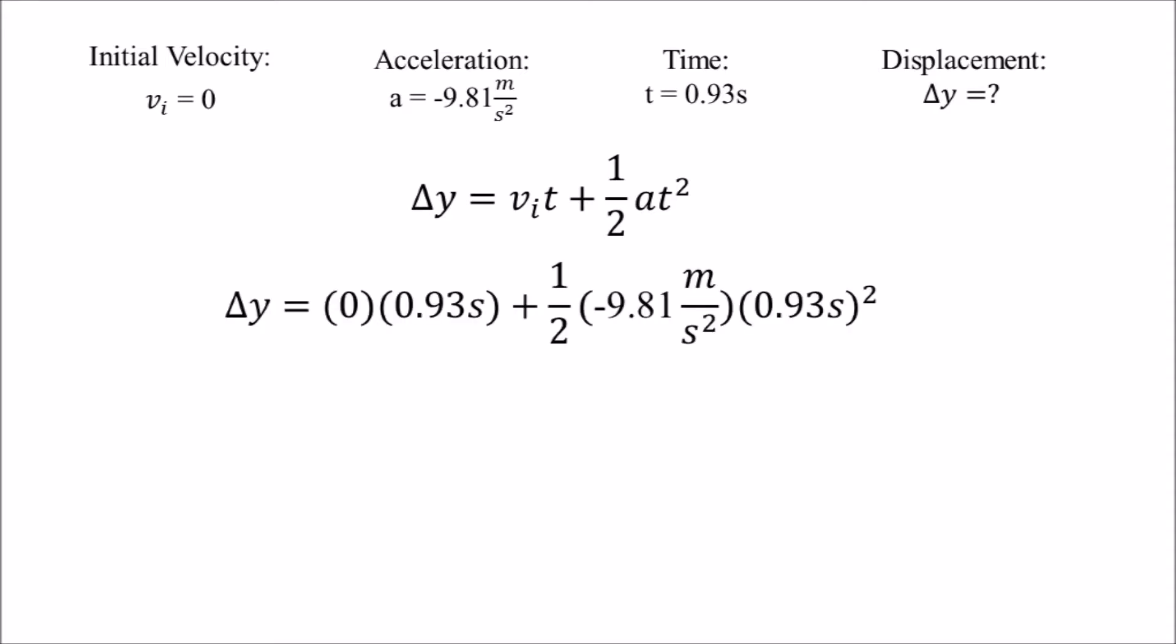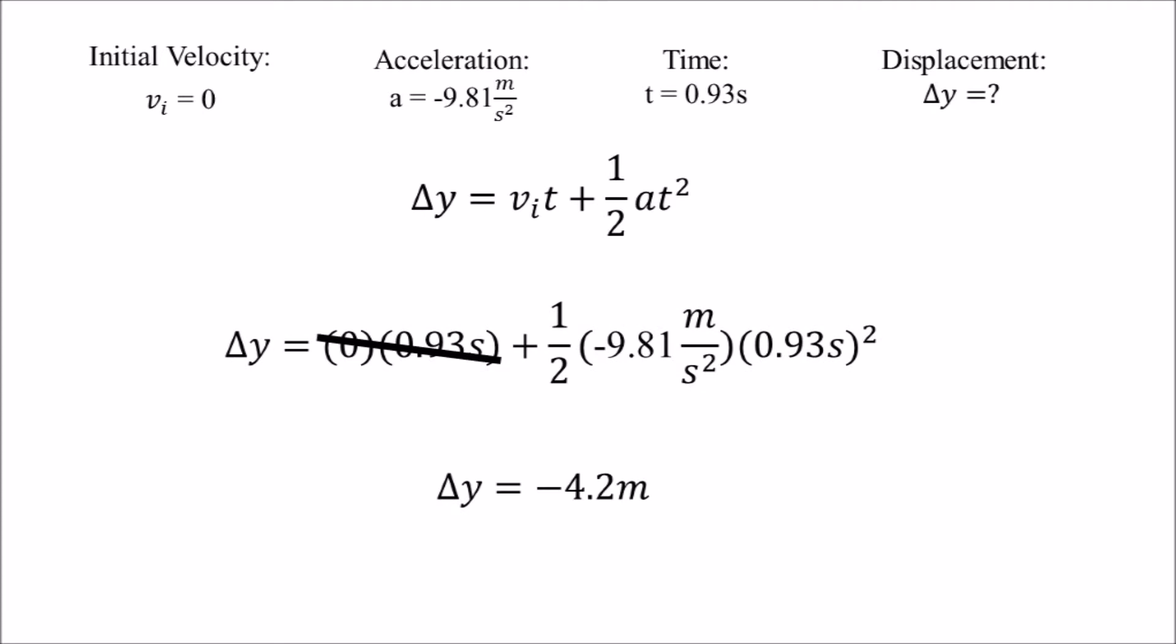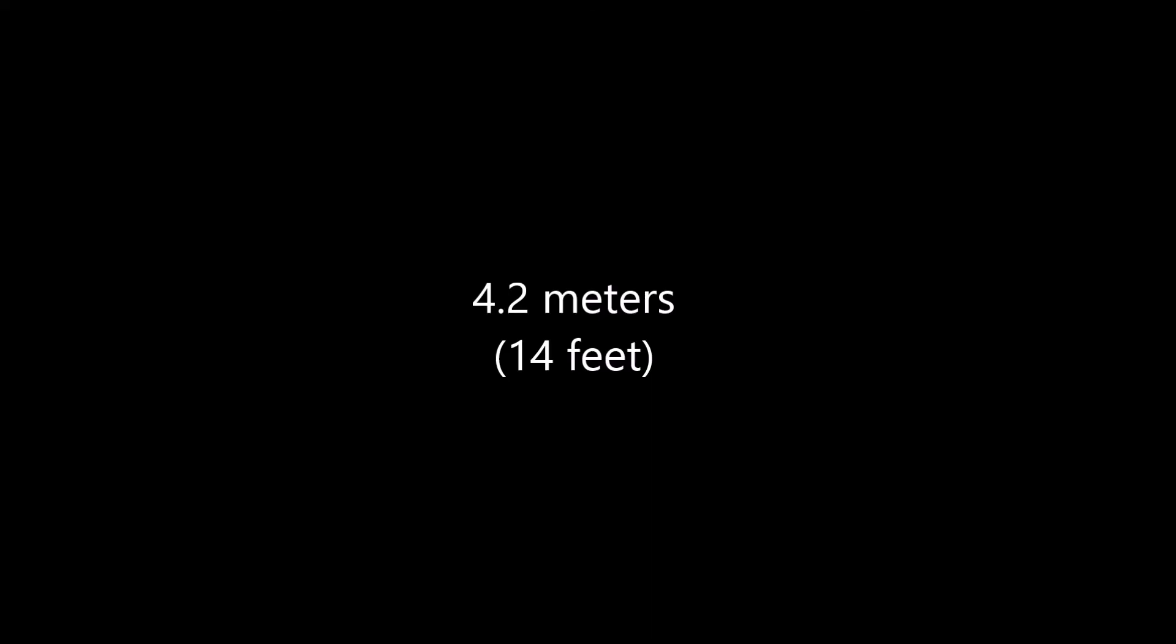After substituting in these variables, we can solve and find that the change in displacement is negative 4.2 meters. It is negative since the binder fell down. This means that the height of the fall was 4.2 meters, or about 14 feet.